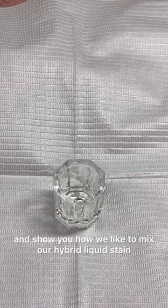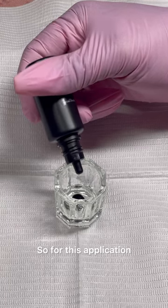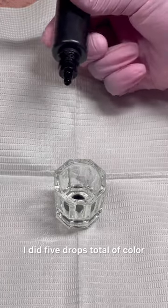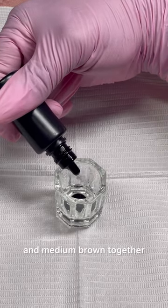I just wanted to come and show you how we like to mix our hybrid liquid stain. For this application, I did five drops total of color. I mixed the color chestnut brown and medium brown together.